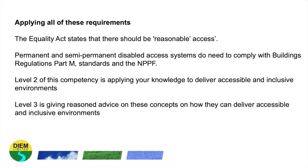Looking now at application of these requirements: the Equality Act states that reasonable access should be given. Permanent and semi-permanent disabled access systems need to comply with Building Regulations Part M, any technical standards, and the National Planning Policy Framework. If you're doing Level 2 of this competency, you need to apply your knowledge to deliver accessible and inclusive environments. Level 3 involves giving reasoned advice on how to deliver accessible and inclusive environments.